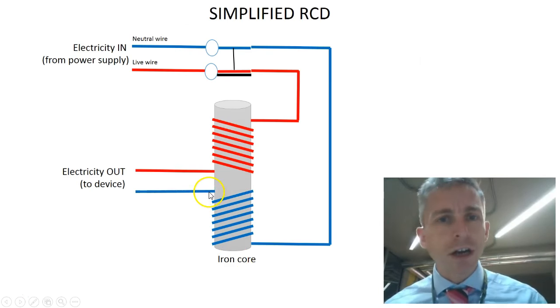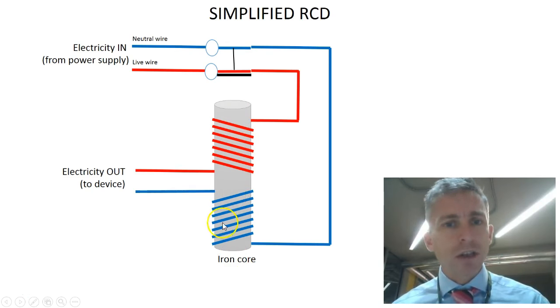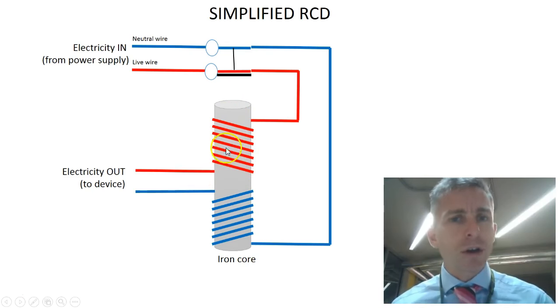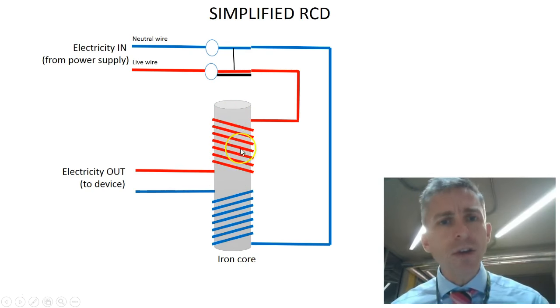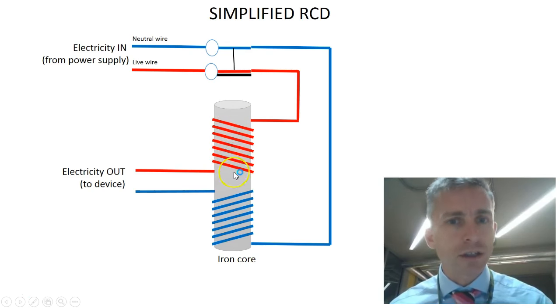So here is a simplified diagram of an RCD. There is an iron core, and the electricity that supplies the device, coming via a live and a neutral wire, passes through this switch gear, and then through a coil which goes around the iron core. Now when electricity passes around a coil, it generates a magnetic field. So a magnetic field will be generated inside this core.